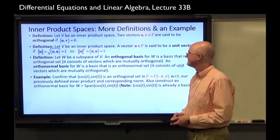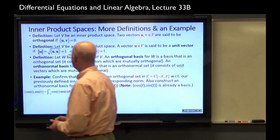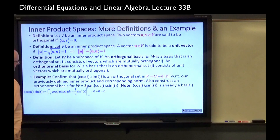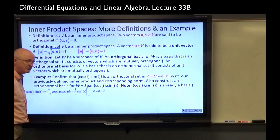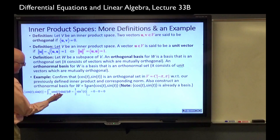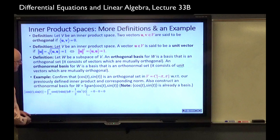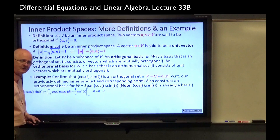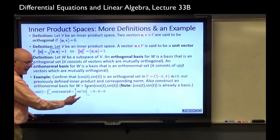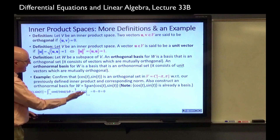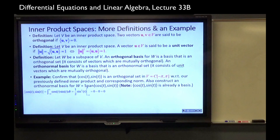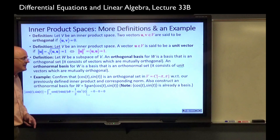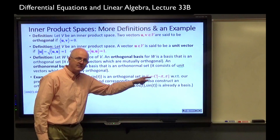We need to do some integrals. The inner product of cosine with sine is the integral from negative pi to pi of cos(t)sin(t) dt, which can be seen to be zero. Using the substitution u = sin(t), du = cos(t) dt, you get one-half u squared, evaluated as one-half sin²(t). Plugging in pi and negative pi both give zero, so zero minus zero is zero. Cosine and sine are orthogonal to each other with respect to the inner product defined on this inner product space.